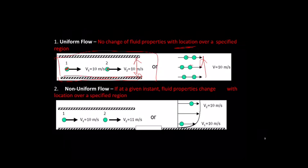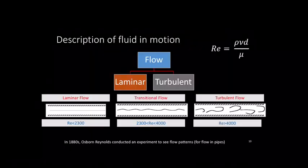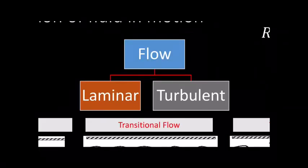For non-uniform flow, fluid properties change with location over a specific region — the opposite of uniform. For example, velocity at point one is 10 m/s and velocity at point two is 11 m/s — so V1 = 10 m/s and V2 = 11 m/s. That is non-uniform flow. Another important description of fluid motion is whether the flow behaves as laminar or turbulent.